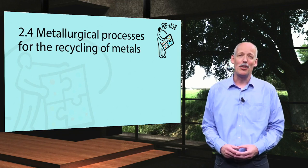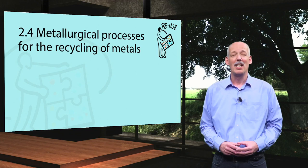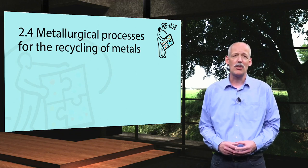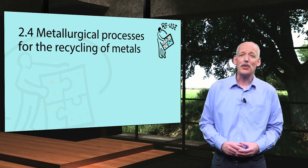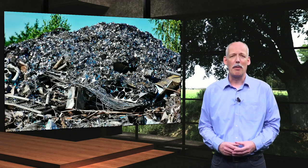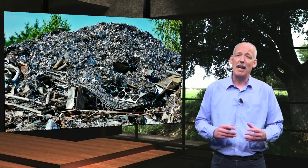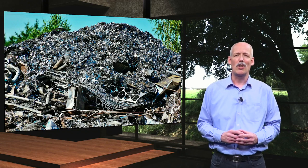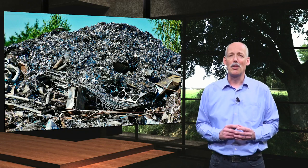Hello, welcome to this lesson on metallurgical processes for the recycling of metals. Generally speaking, there are two major types of secondary resources for metals recycling. The first one is metal scrap and the second one is metal containing wastes or residues. Metal scrap will be the main topic in this video, because metal containing wastes or residues are from more specific sources and processes.